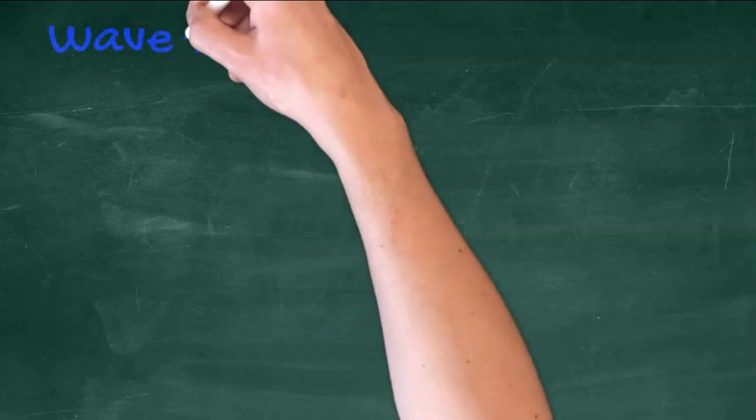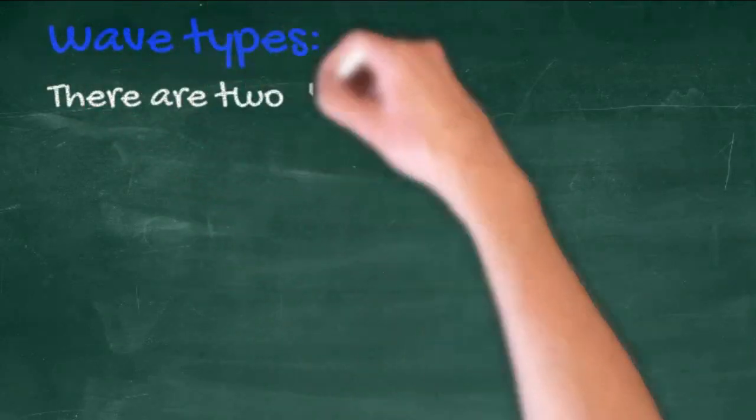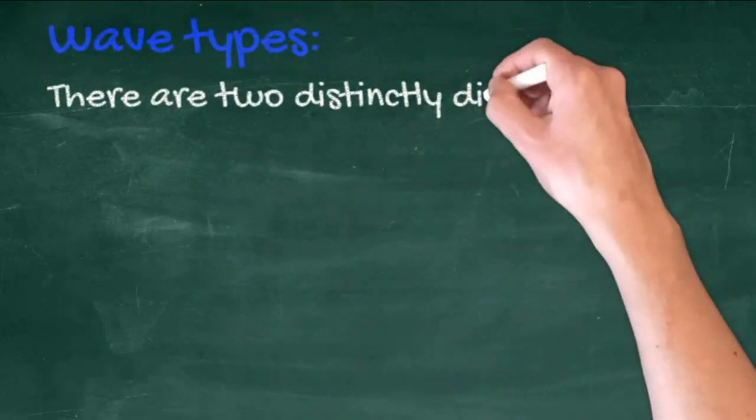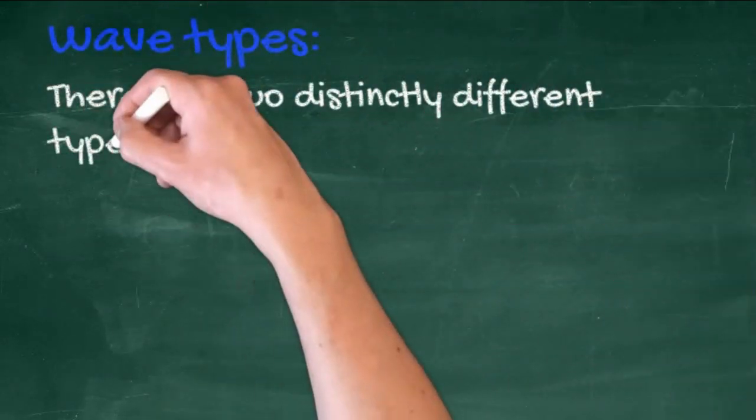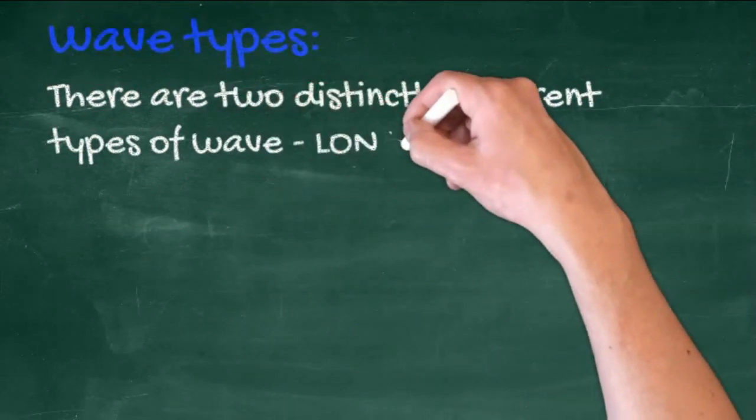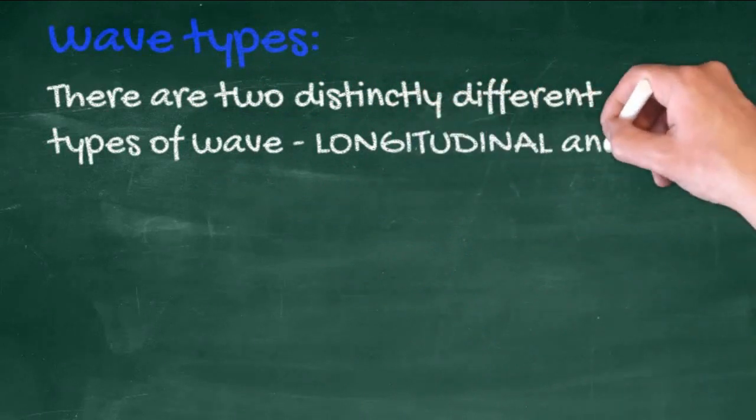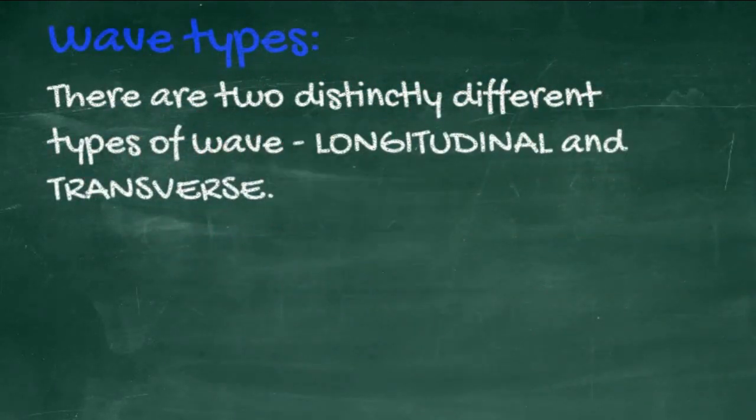This particle diagram shows how the particles are affected as the wave passes through. There are two distinctly different types of wave: longitudinal and transverse.